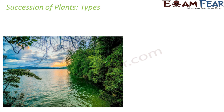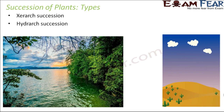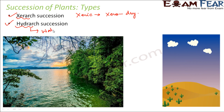Now in plants also, succession can be of two types: xerarch succession and hydrarch succession. Xerarch is derived from the word xeric, which means dry. Hydrarch is derived from the word hydro, which means water. So in one succession, water plays an important role, and in the other we are talking about a dry region where there is lack of water.